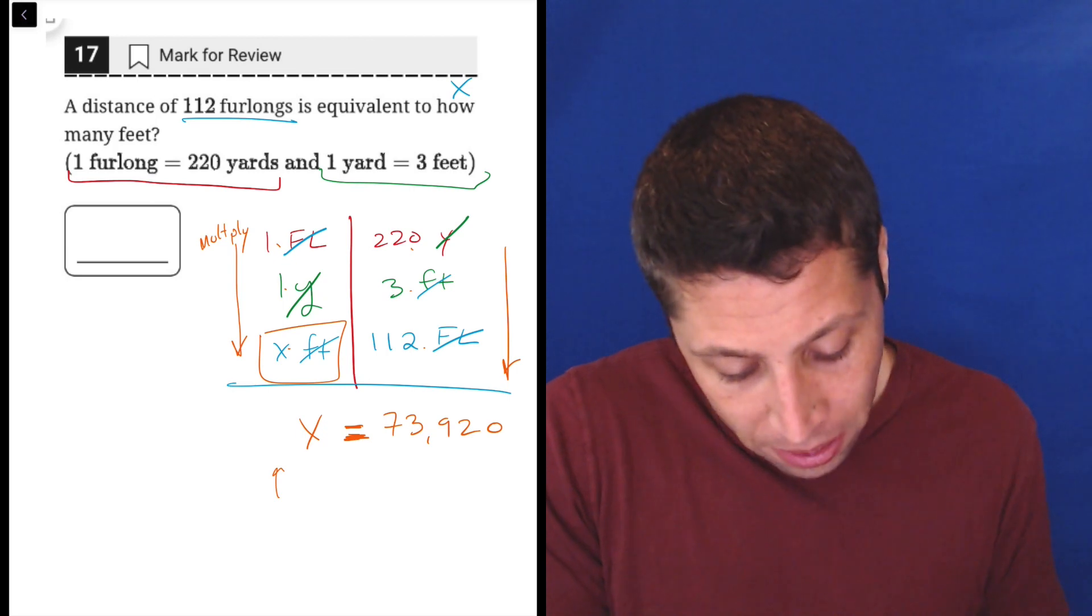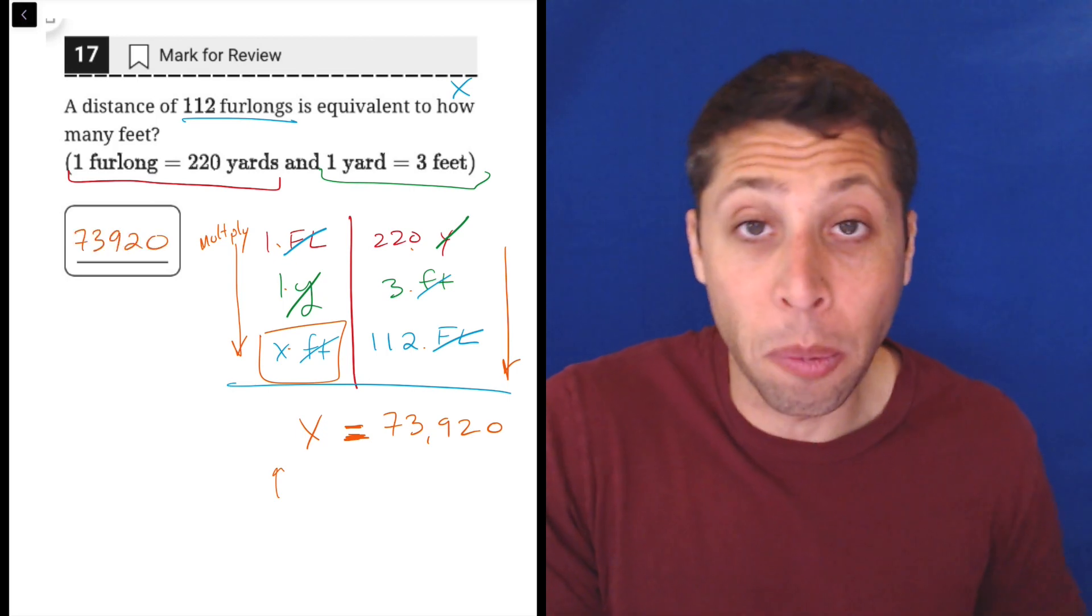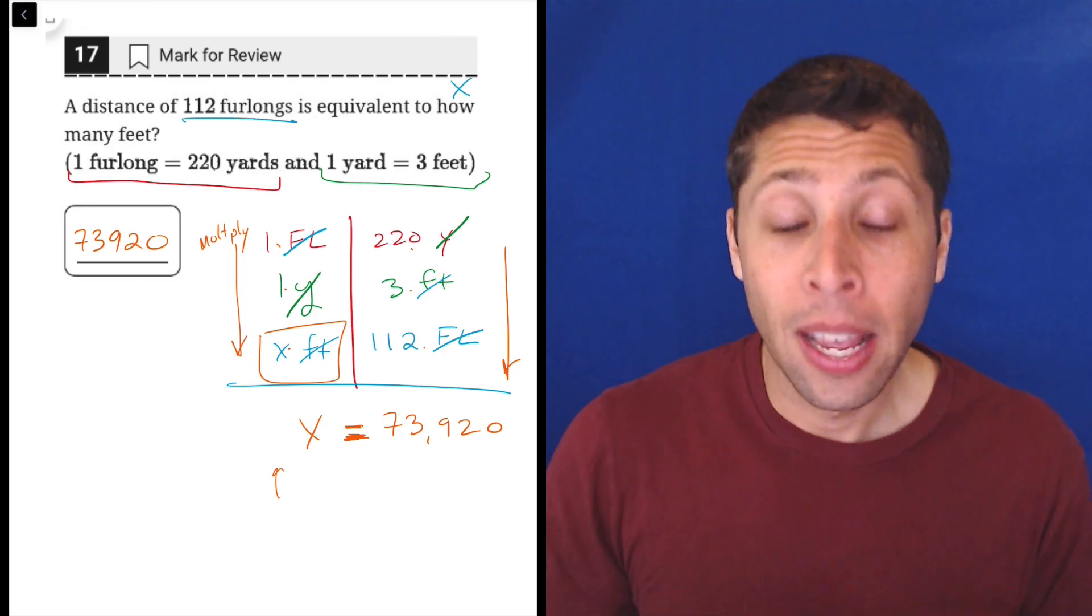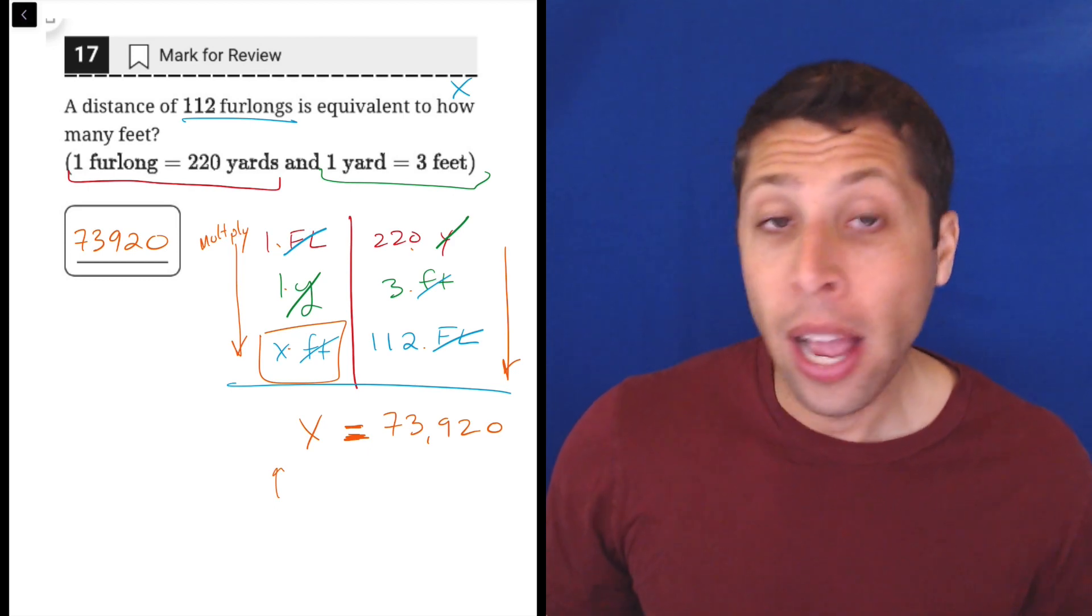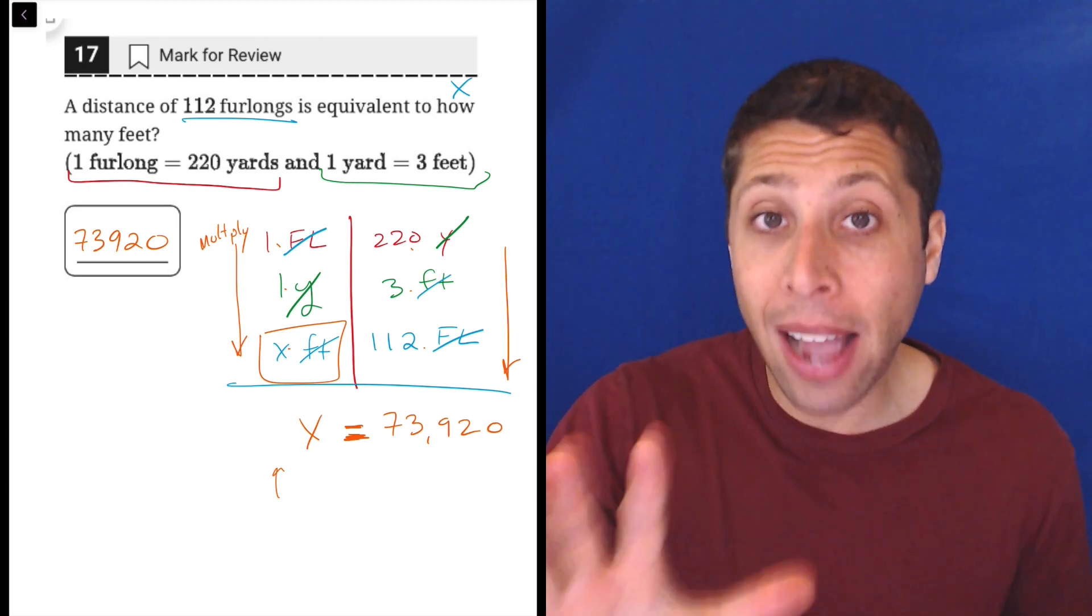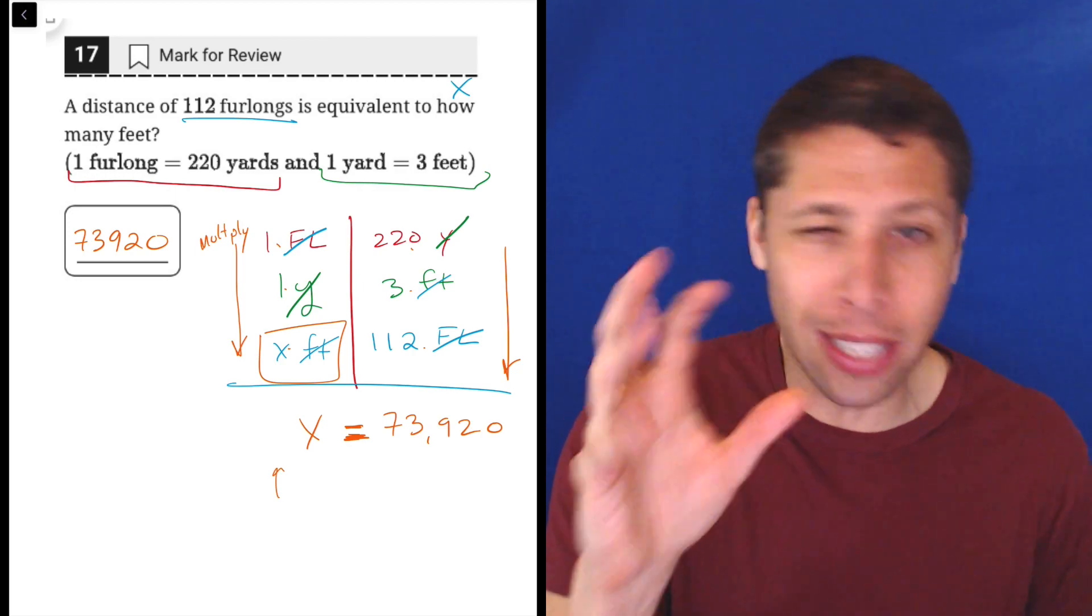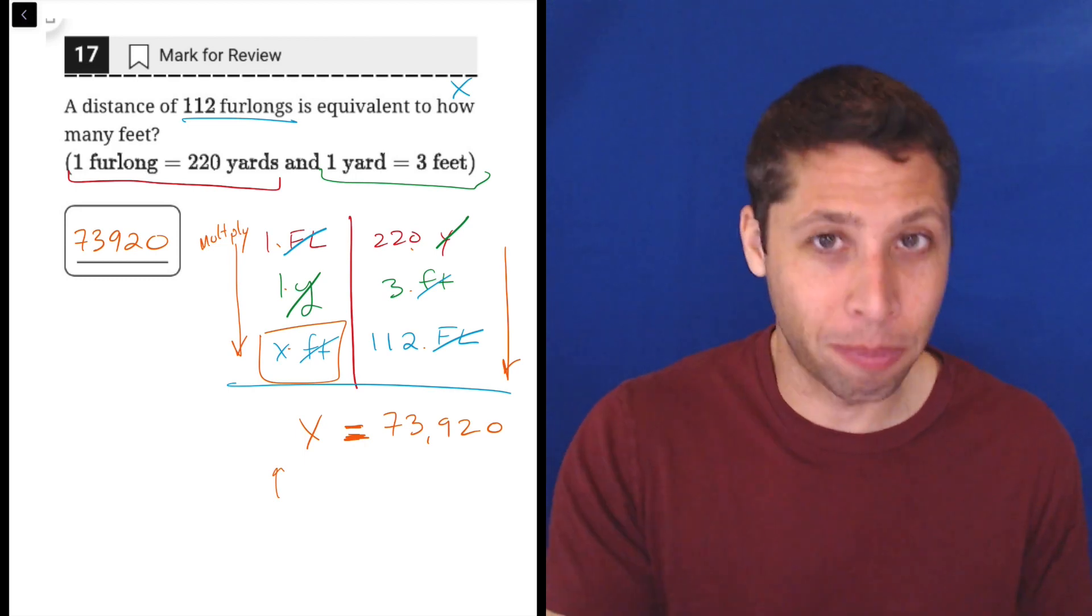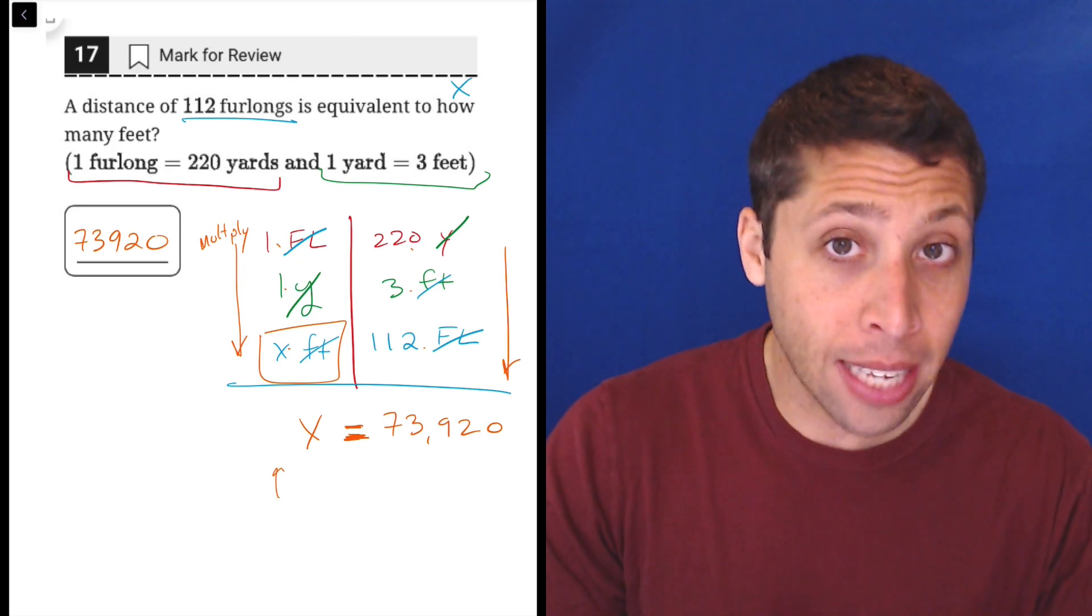So we would just enter that into the answer form. We don't need the comma, and we would not want to round or anything like that. They ask for the specific number, and we can put in five digits for positive numbers and six digits or spaces for negative numbers. So here, positive number, just the five is good, and that's all we've got anyway. So we're all set.